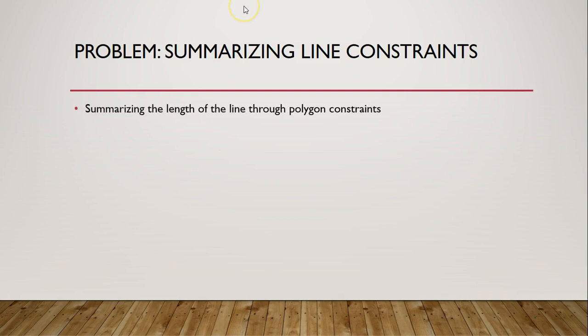Welcome back students. In this lecture we are faced with summarizing lines through a set of polygon constraints. This is similar to the last lecture where we were tasked with summarizing characteristics of a polygon through an entire feature class of polygons. Turf had no built-in capability to do this like it did for points, so we had to write our own. But at least in that case, Turf had a method for intersecting two polygons. Sadly, there's no such method for intersecting a line with a polygon in Turf.